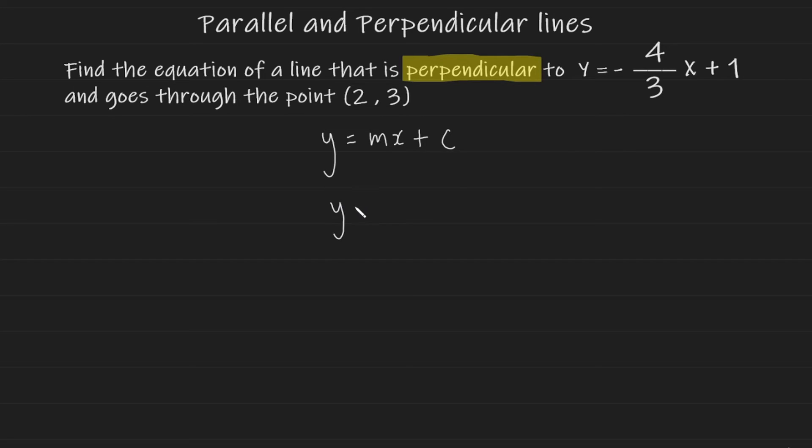And now for the gradient, the fact that they've told us it's perpendicular means we need to take the negative reciprocal of this line here. So instead of minus 4 over 3, since it's already a minus, taking a minus of something that is already a minus makes it a positive. So instead of minus 4 over 3x, we're going to have positive 3 over 4x plus c.